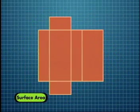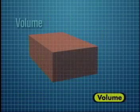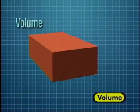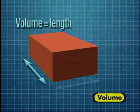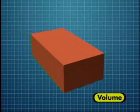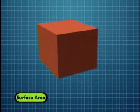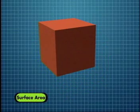Let's summarize. The surface area of a rectangular prism is the sum of the surface area of its six sides. The volume of a rectangular prism is the length times the width times the height. A rectangular prism has the minimum surface area when it's a cube, and the surface area increases as you flatten it.